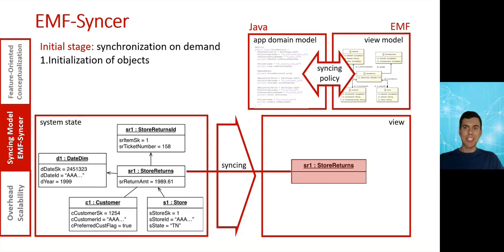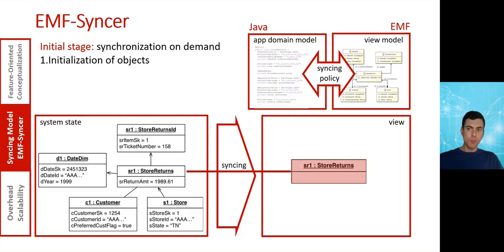Given a program snapshot or excerpts of it, the EMF Syncer obtains the counterpart representation of that snapshot as an instance of the domain model. This initial synchronization can happen in two modes: a push-based model where the user determines what needs to be synced, or a pull-based model where the program snapshot is translated on demand as required by an MDE task. In this example, we have a domain model of an online store and we want to implement a query using OCL expressions to find customers that are returning products too frequently.